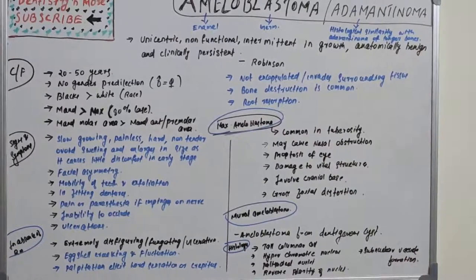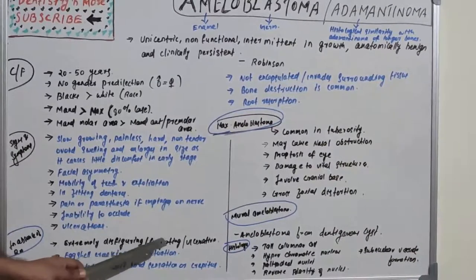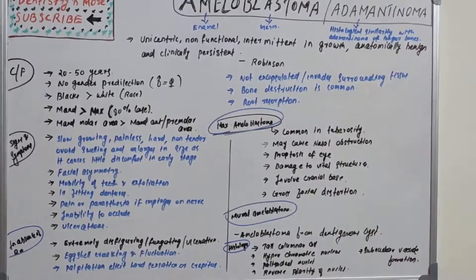Because there is very little discomfort in the early stages, the lesion continuously grows unless it shows very clear clinical symptoms. In the absence of treatment, it will become extremely disfiguring, fungating, and ulcerative, with egg-shell cracking and fluctuation — if left untreated, it keeps increasing.